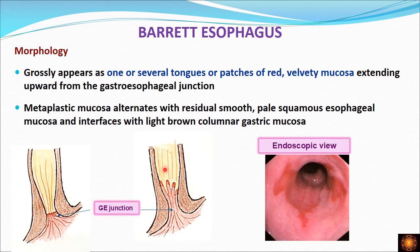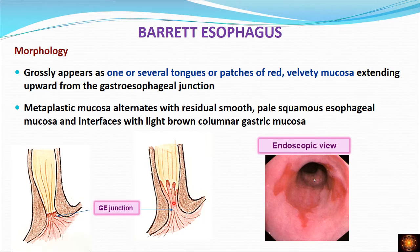Grossly, on endoscopic view, Barrett's esophagus appears as tongues or patches of red velvety mucosa. These tongues of red velvety mucosa extend upward above the gastroesophageal junction, alternating with the pale squamous mucosa of the normal squamous epithelium. At the bottom, this red velvety mucosa interfaces with the brown-colored gastric mucosa. In the endoscopic view, the red colored patchy tongue-like velvety mucosa is the Barrett mucosa, and in between is the pale normal squamous epithelium.